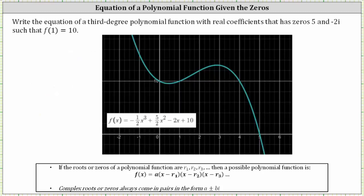Let's take a look at this graphically. Here's the function that we just found. Notice there is only one x-intercept at x equals 5, which verifies the zero of five. Because the two other roots of negative 2i and positive 2i are imaginary, they will not show on the graph as x-intercepts. We were given the function value f of 1 equals 10, which corresponds to the point 1 comma 10, shown on the graph. Notice if x is zero, the output is positive 10, giving us the y-intercept of 0 comma 10. Finally, because the leading coefficient is negative, the end behavior to the left is f of x approaches positive infinity, and the end behavior to the right is f of x approaches negative infinity. So the graph does verify our function is correct.